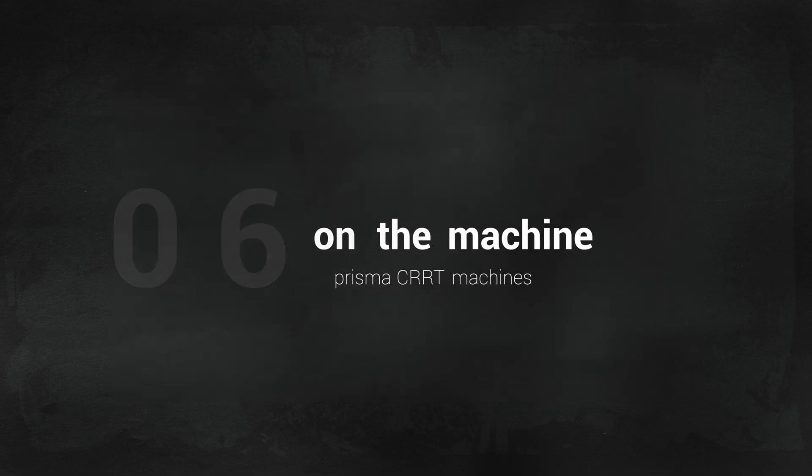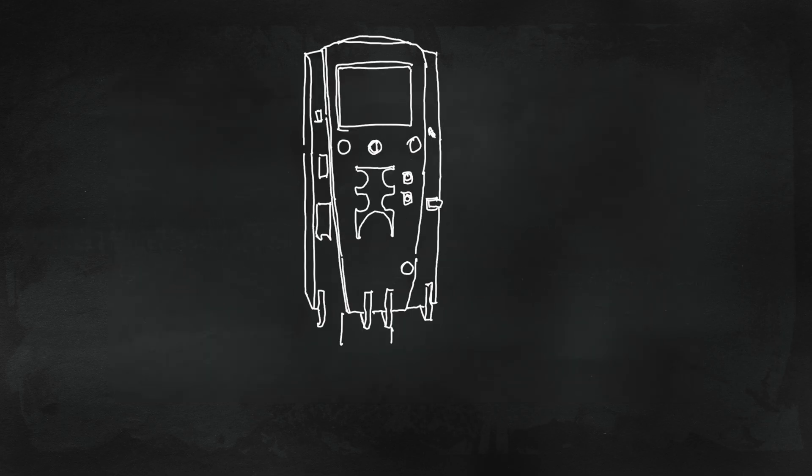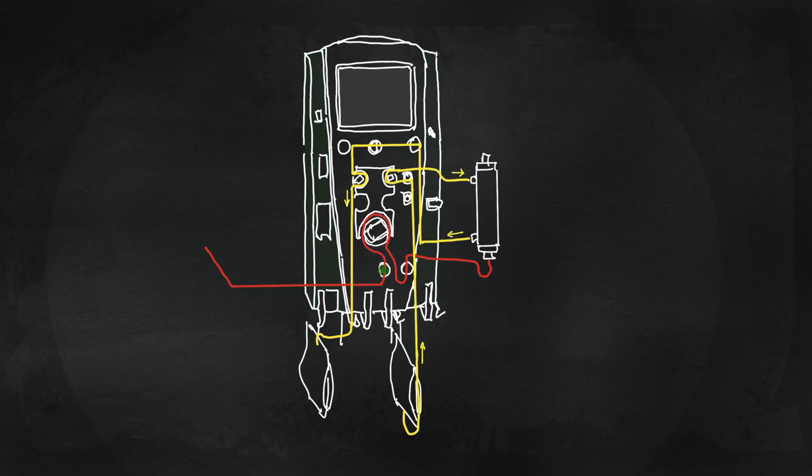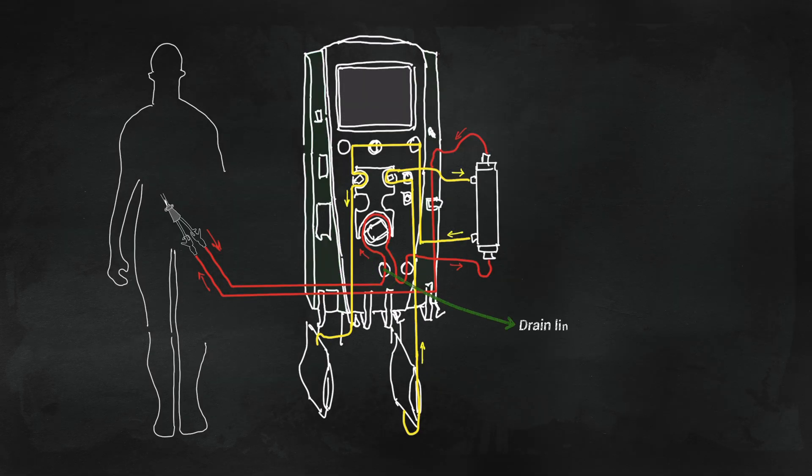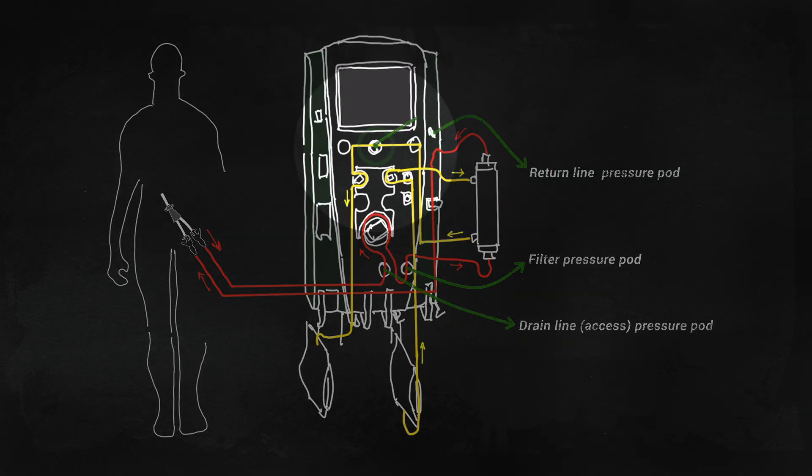We'll use the Prisma CRT machines to point out the pressure pods that we have discussed. There's the access pressure, filter pressure between the pump and the filter, return pressure, and the effluent pressure pods.